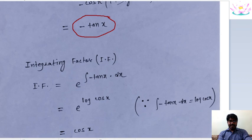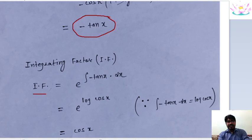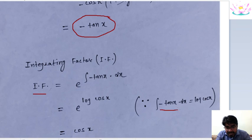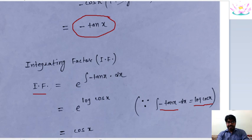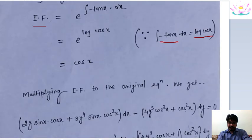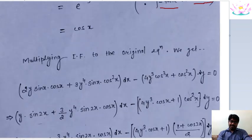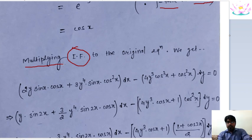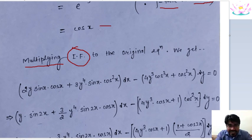So what is the integrating factor? The integrating factor is e raised to the integral of the term we just calculated. The integral of −10/x, as we know, is log(cos x), and e raised to log(cos x) is simply cos x, because log and exponential cancel automatically. So after multiplying this integrating factor into the non-exact differential equation, we get the exact differential equation.